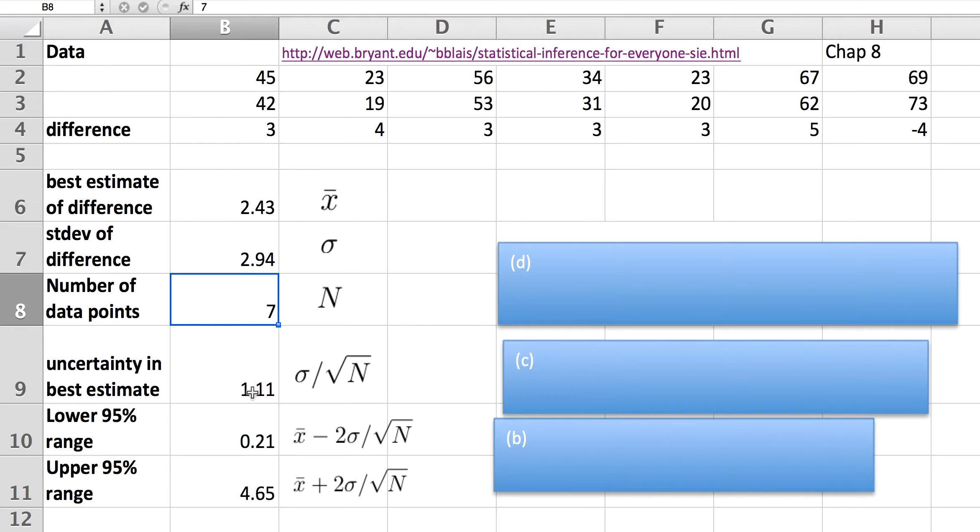It's not important to know where that comes from, it's just to know essentially that the larger the spread in the data, the less certain we are in our best estimate, but the more data points we have, the more certain we are in that value.